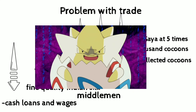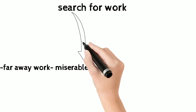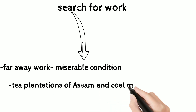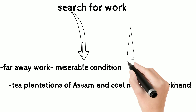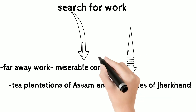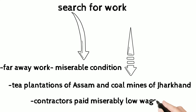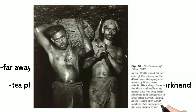Tribals had to go to faraway places to search for work, which led to even more miserable conditions. The tea plantations of Assam and coal mines of Jharkhand are examples where tribals were paid miserably low wages and were hired contractually. As seen in the picture of coal miners of Bihar from 1948, they were not even allowed to return home.